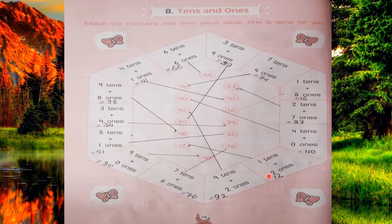Next, 1 ten and 2 ones. Next, 9 tens and 2 ones. 9 tens is equal to 90, and 2 ones is 2. So 90 plus 2 is 92. You will match with 92.